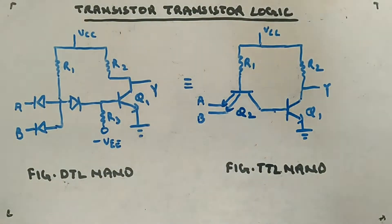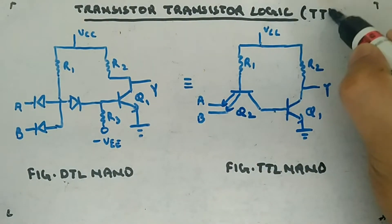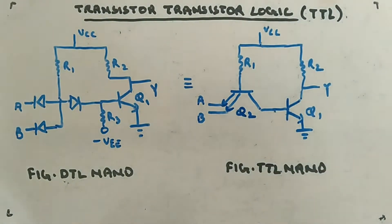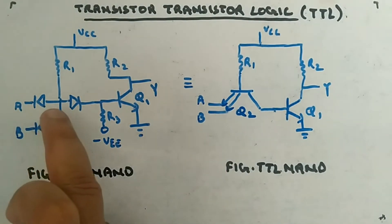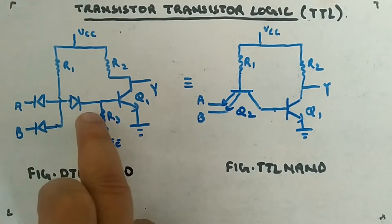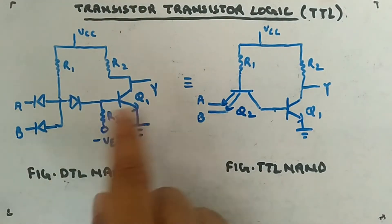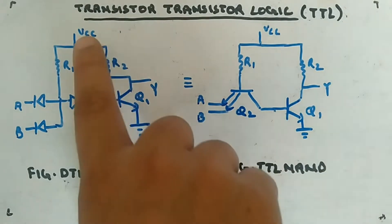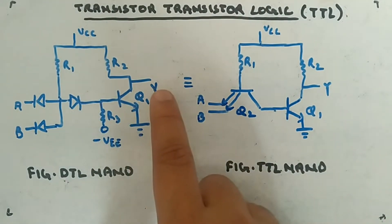Let's look at transistor-transistor logic, also called TTL. We are already aware of DTL gates — the DTL logic family — where we had two diodes connected to the input, and a diode separating the inverter and the NAND gate. It is basically a NAND gate with R1, R2, VCC, R3, minus VEE, and Y as the output.